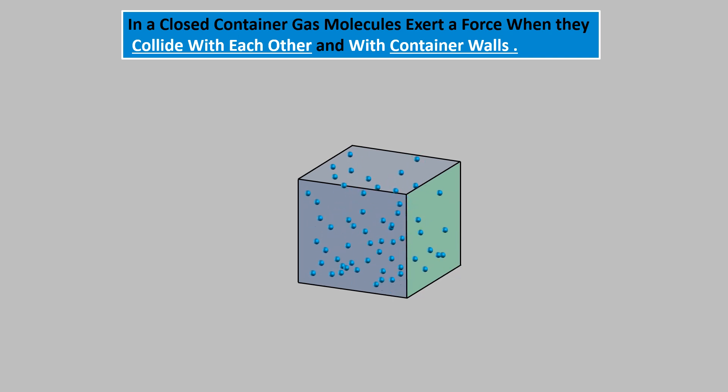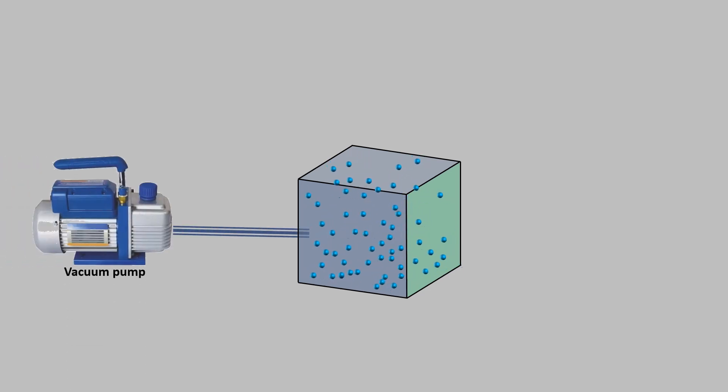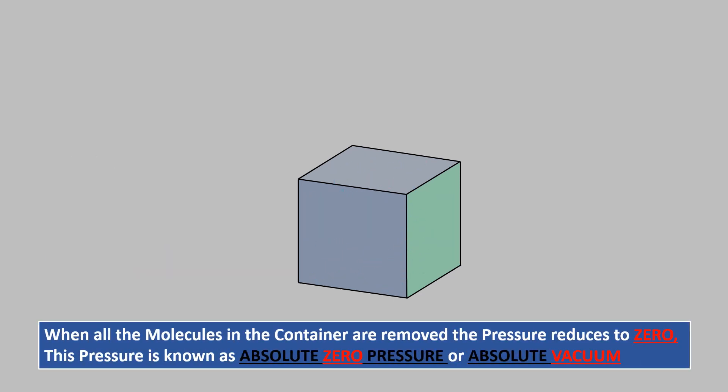If we connect a vacuum pump to this container, the vacuum pump can remove almost all the molecules of the gas inside the container. As a result, the pressure inside the container reduces to zero. This pressure is known as absolute zero pressure or absolute vacuum.